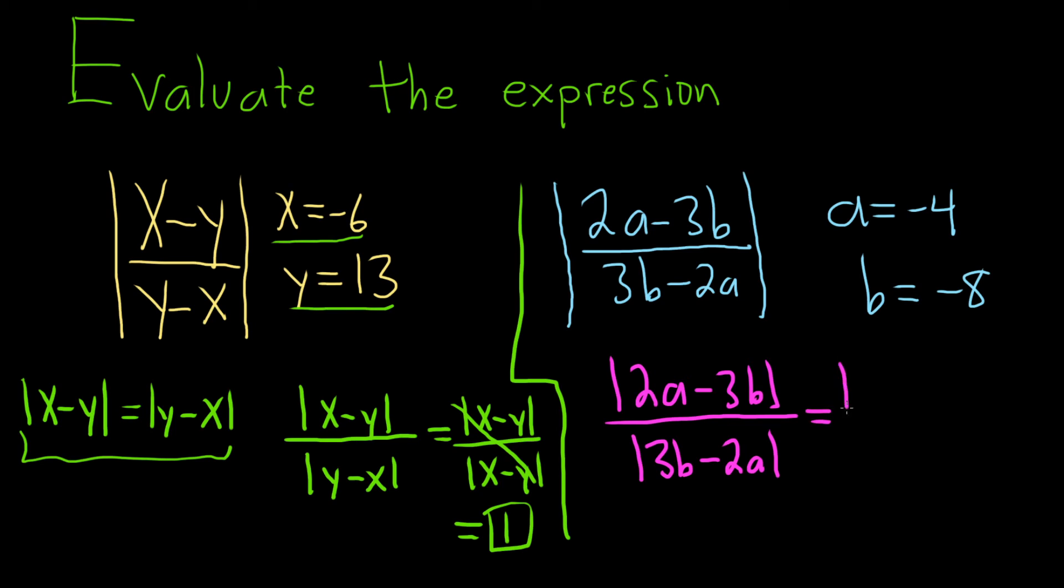This time, let's switch the top piece. Just to be different, we'll make it 3b minus 2a. You can just switch them. And this is the absolute value of 3b minus 2a. These cancel, and you get 1.